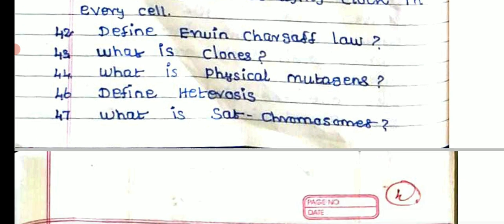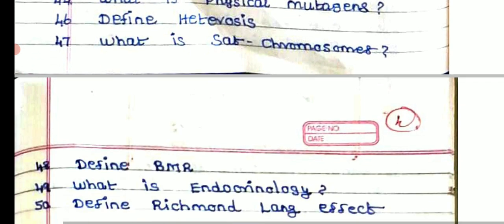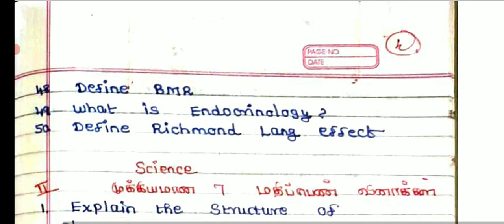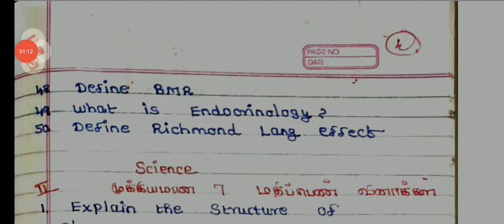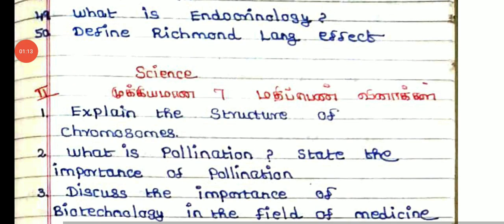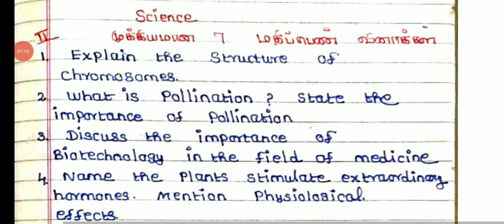What is double fertilization? Define alleles. Define telomere — active aging clock of every cell. Define erythrosarcoplasm. What are clones? What are physiological mutagens? Define ethrosis. What is a SAT chromosome? Define BMR. What is ethnochonology? Define the Richmond-Lang effect.